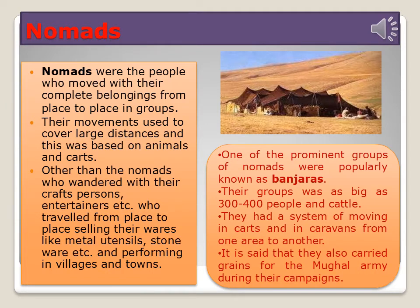Nomads were people who moved with their complete belongings from place to place in groups, covering large distances, based around animals and cattle. Other nomads included craftspersons and entertainers who traveled from place to place selling their wares like metal utensils and stoneware, and performing in villages and towns. One prominent group of nomads were the Banjaras. Their groups were as large as 300 to 400 people and cattle, moving in carts and caravans from one area to another. It is said they also carried grains for the Mughal army during their campaigns.